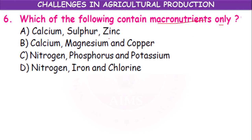The options are: (A) calcium, sulfur, zinc; (B) calcium, magnesium, and copper; (C) nitrogen, phosphorus, and potassium; (D) nitrogen, iron, and chlorine. Macronutrients are those required in large quantities. The answer is option C — nitrogen, phosphorus, and potassium (NPK). Every crop requires NPK.